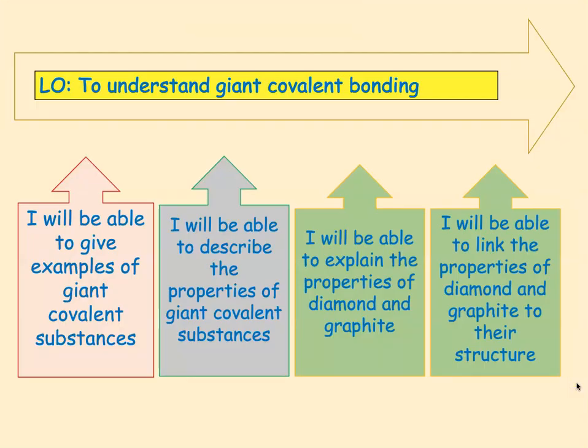The learning objective for today is to understand giant covalent bonding, and there are four success criteria. We're going to be able to give examples of giant covalent substances, describe their properties, specifically explain the properties of diamond and graphite, and then be able to link the properties of diamond and graphite to their structure.